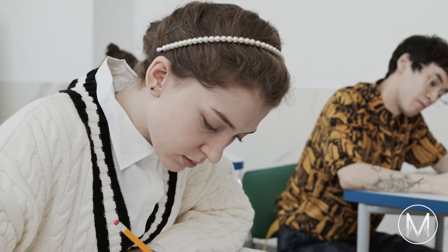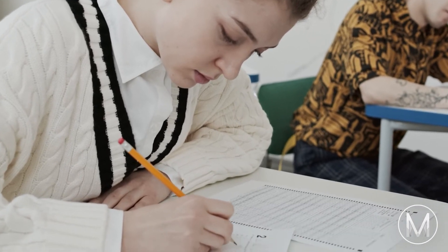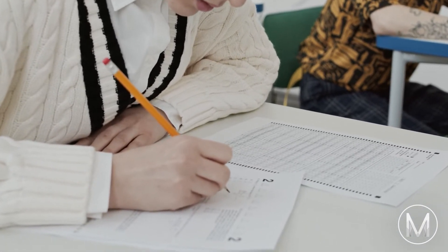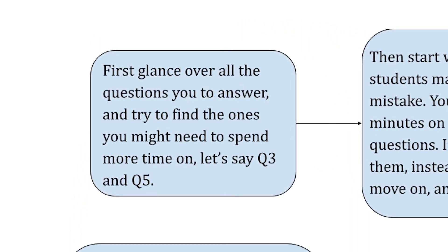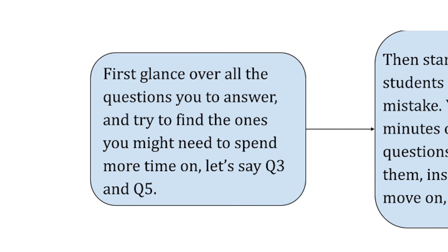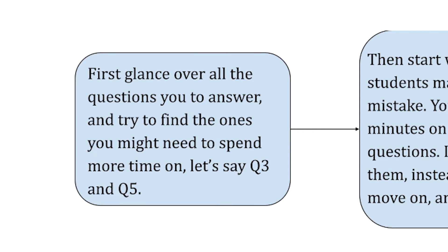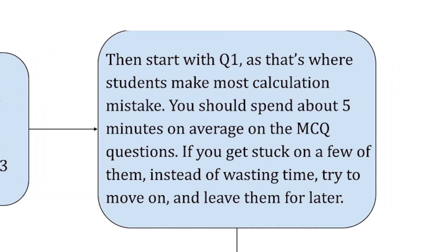One key tip towards the end of your preparation is effective time management. By this point you should have a solid understanding of your weaknesses and strengths — which questions are more time consuming and which you can get correct fairly quickly. Now it's time to start strategizing your time utilization in the actual exam. One of our top MAT scorers recommends first glancing over all of the questions to find the hard ones where you might need to spend more time. After that, start with question one, as that's where students make the most calculation mistakes. Spend about five minutes on average on the MCQ questions, and if you get stuck on a few, move on and leave them for later.